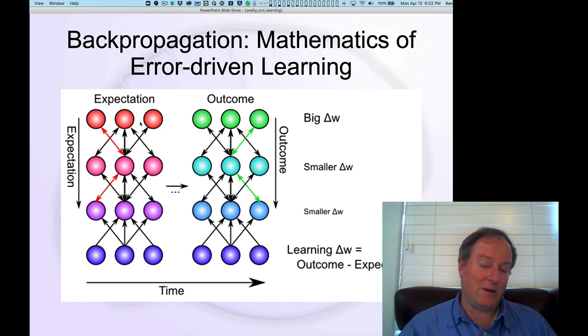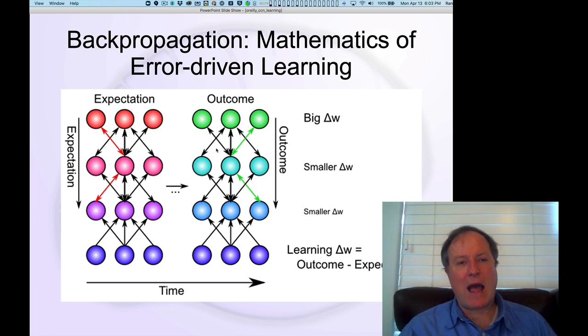Maybe you thought there was going to be a red outcome, and instead it turned out that it was actually a green outcome. Those changes that you experience at the level of these kind of output units here, this place where you actually see the difference between the expectation and the outcome.